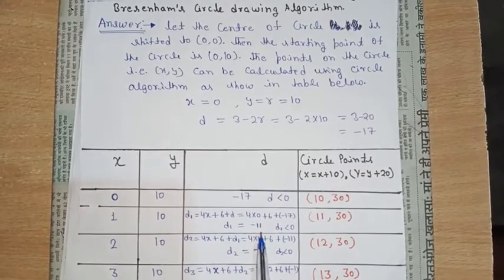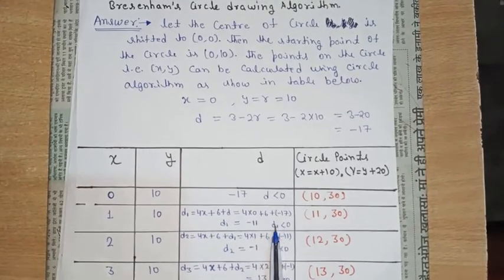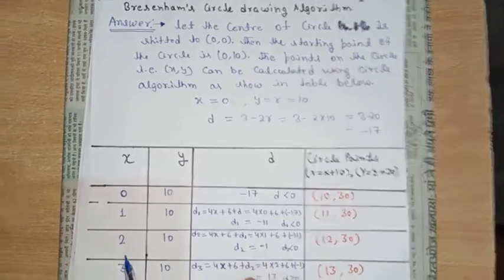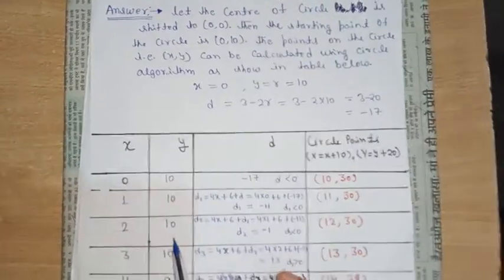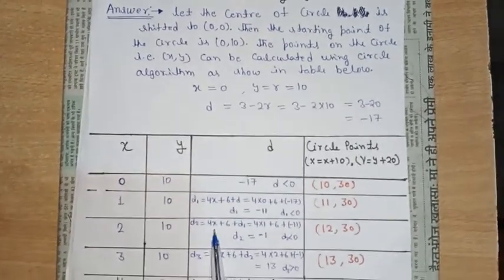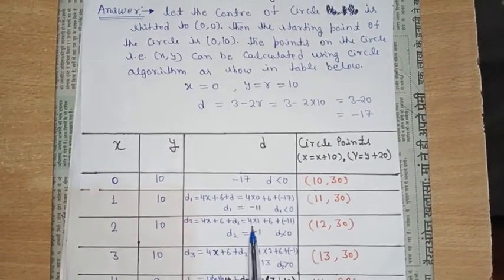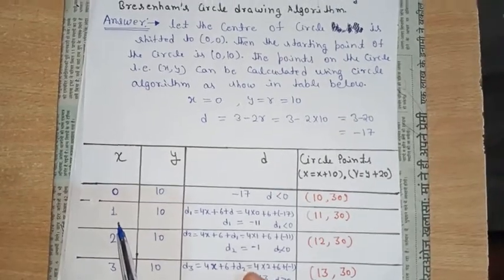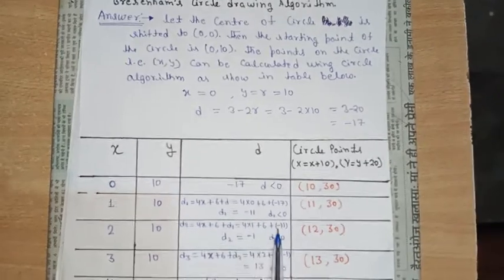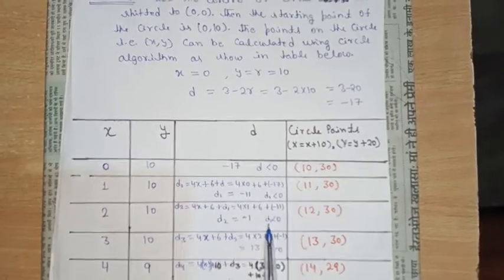Again we compare d1 with 0. d1 = minus 11 is less than 0. So x-axis gets an increment: 1 becomes 2. The y-axis remains the same: 10 stays 10. The formula is d2 = 4x + 6 + d1 = 4 into 1 (previous x) + 6 + (minus 11) = minus 1.